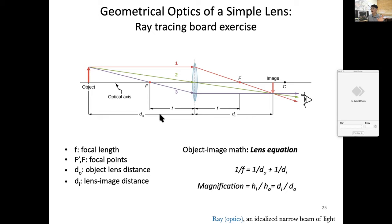So the height ratio will be magnification from the geometry of this. You can follow this triangle versus this. So the ratio of h o to h i will be the same as ratio of d sub o to d sub i. So that is magnification.